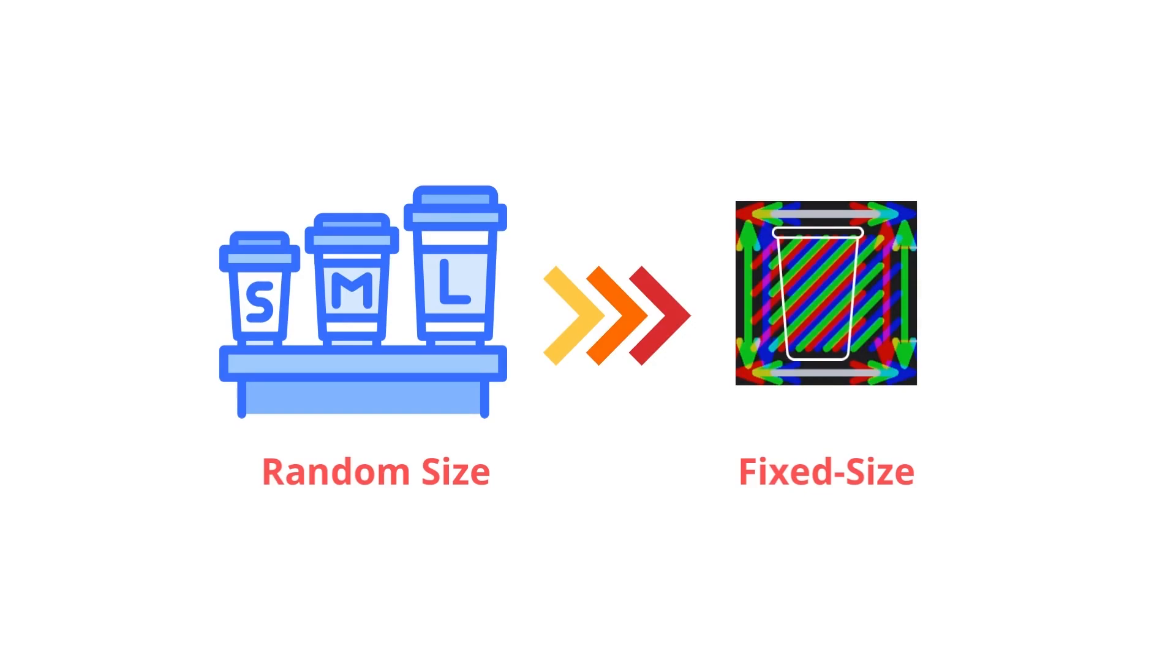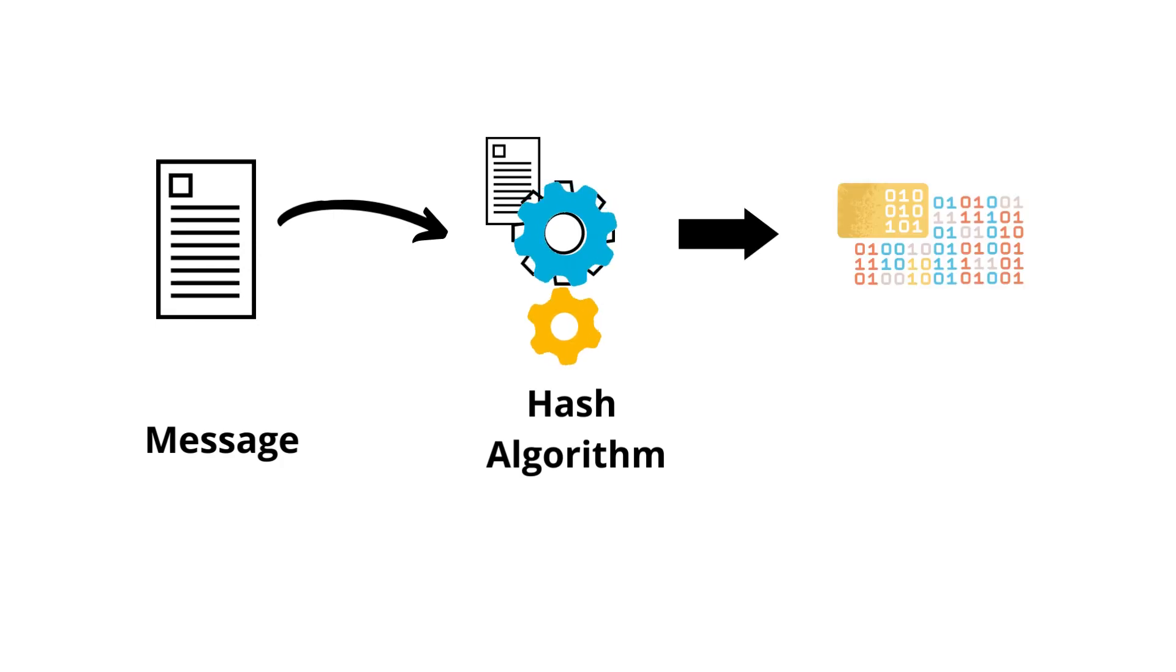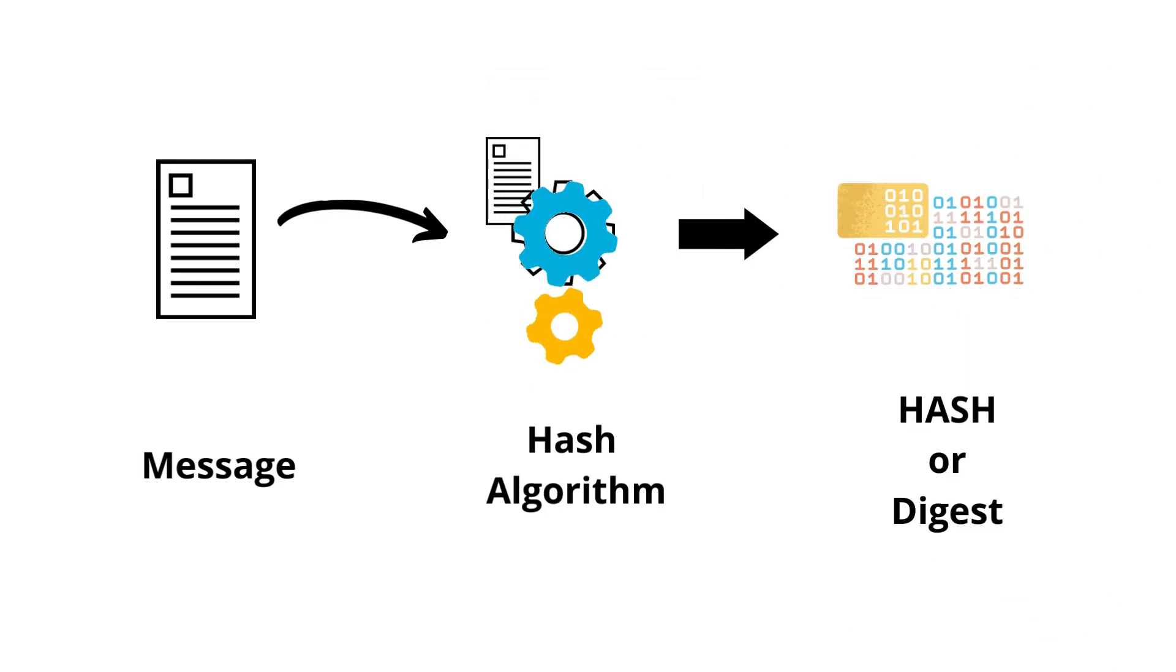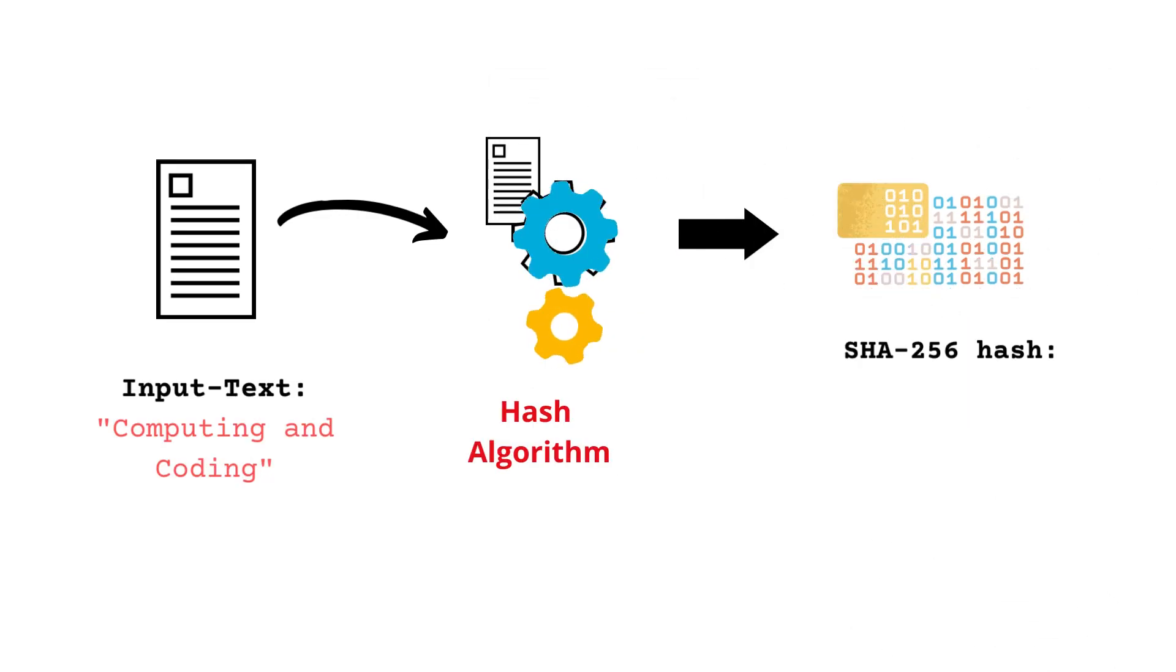A hash function can be used to map data of random size to fixed size values. Basically, it is a mathematical algorithm for converting an input, such as a message, into a fixed-length string of characters referred to as the hash or digest. The resulting hash is unique to the input data.